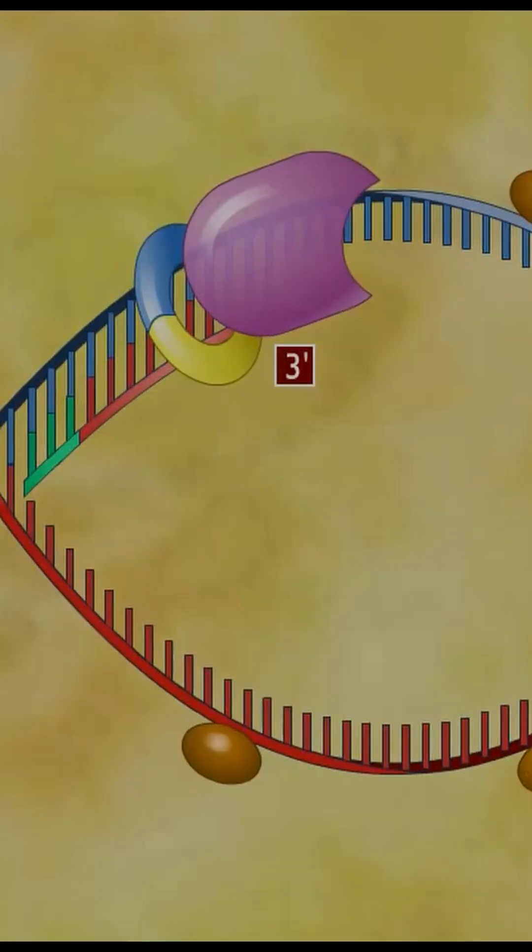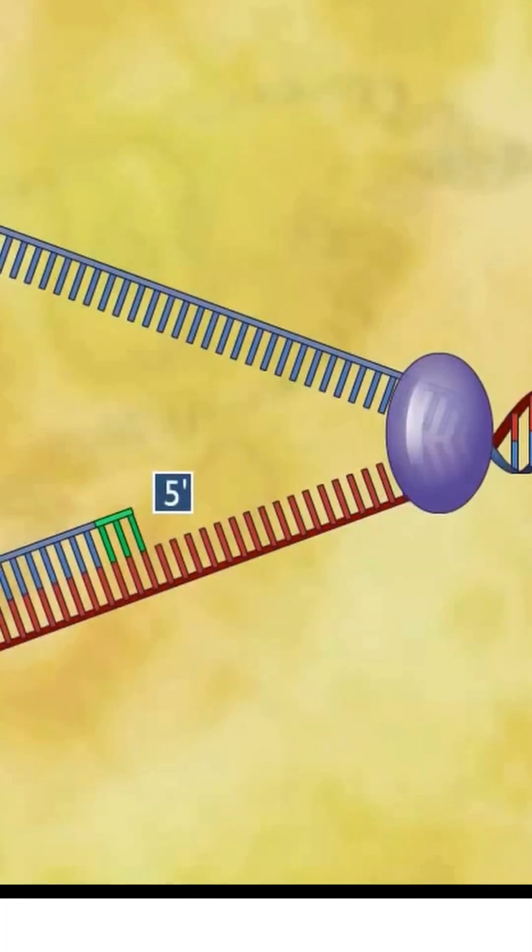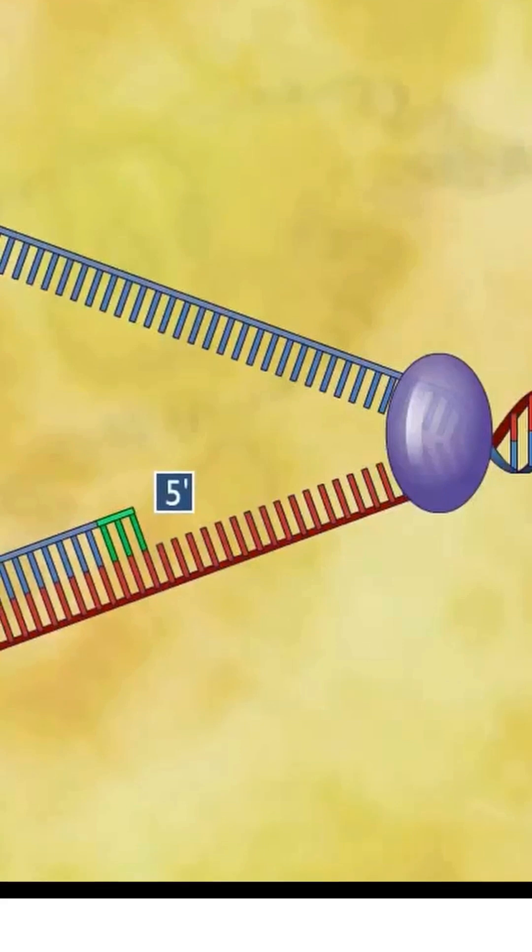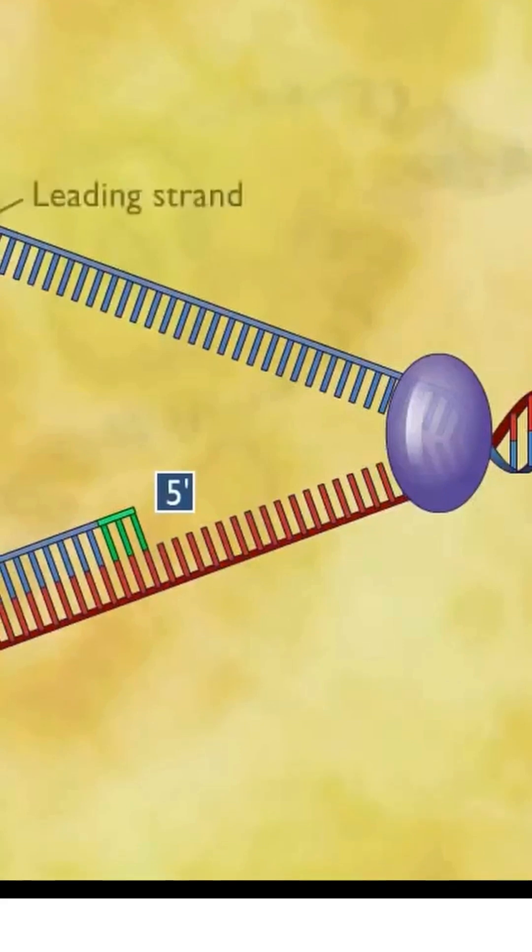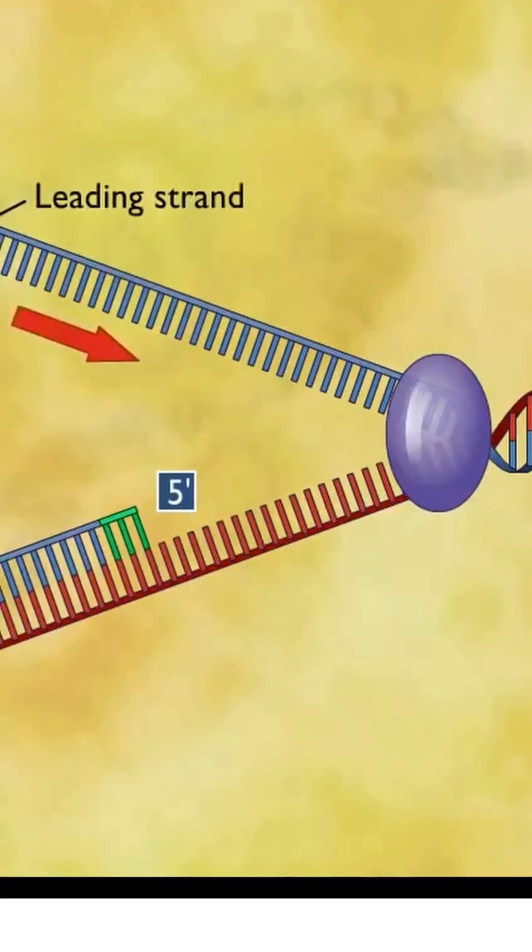Because the two parent strands of DNA are anti-parallel, they are oriented in opposite directions and must therefore be elongated by different mechanisms. The leading strand elongates toward the replication fork by adding nucleotides continuously to its growing three-prime end.